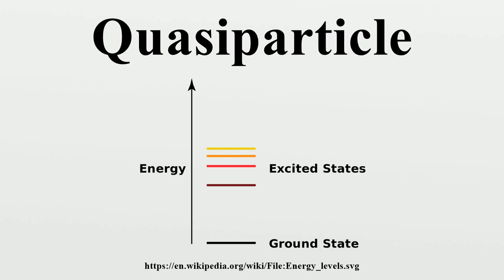More specialized examples: composite fermions arise in a two-dimensional system subject to a large magnetic field, most famously in systems that exhibit the fractional quantum Hall effect. These quasi-particles are quite unlike normal particles in two ways. First, the charge can be less than the electron charge e — they have been observed with charges of e/3, e/4, e/5, and e/7. Second, they can be anyons, an exotic type of particle that is neither a fermion nor a boson. Also notable are Stoner excitations in ferromagnetic metals.